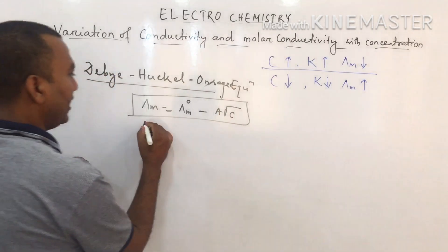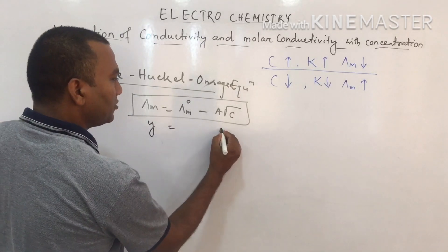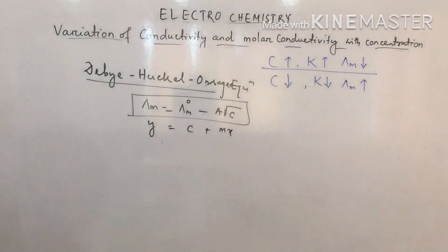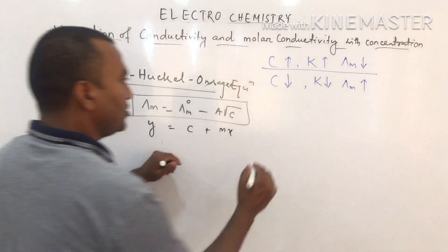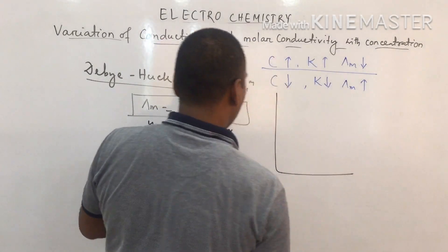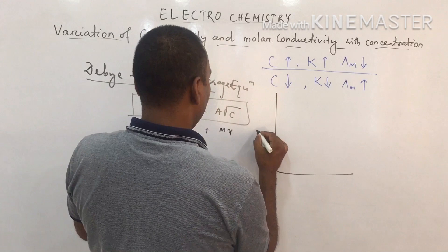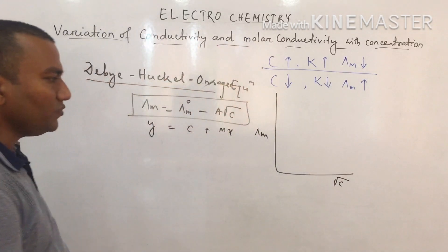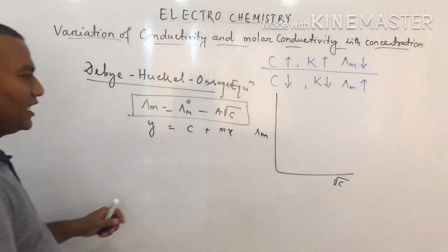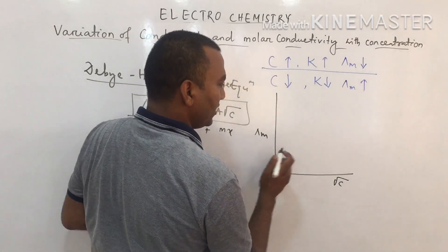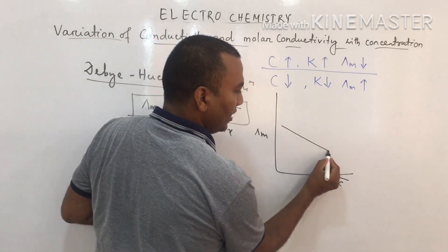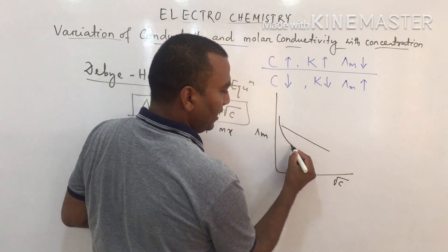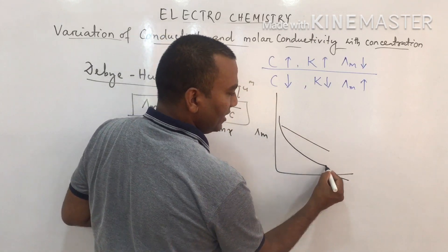This equation is in the form y = mx + C (straight line). If we plot λm vs √C, for strong electrolytes the graph is a gently sloping line, and for weak electrolytes (like acetic acid) the graph shows a sharp rise at low concentrations.